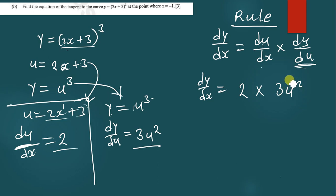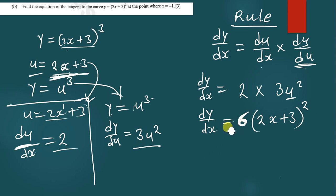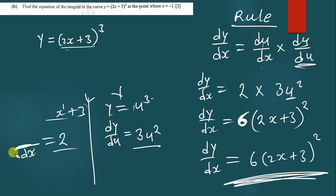Now, u is simply the expression 2x plus 3, so we substitute it in. We have 2 times 3 — the answer is 6 — then we put 2x plus 3 where there is u, raised to the power 2. So dy/dx equals 6 times (2x + 3) to the power 2. This is the first derivative, which is the gradient function of the given equation.